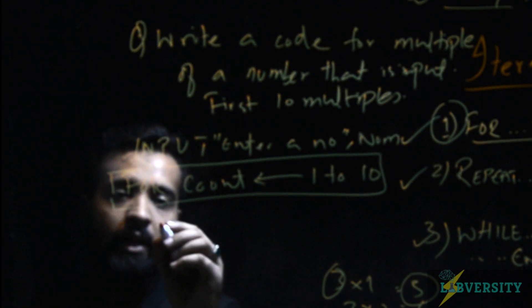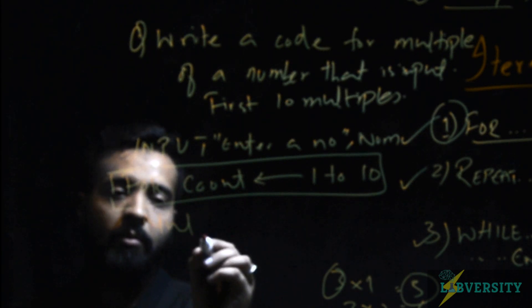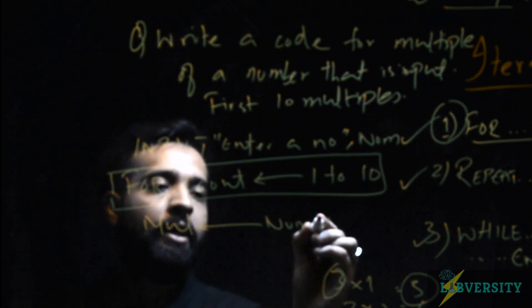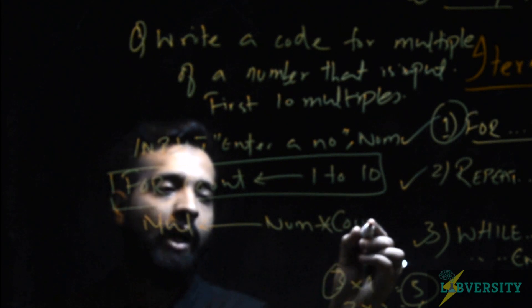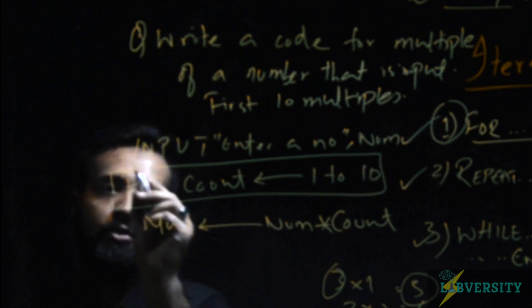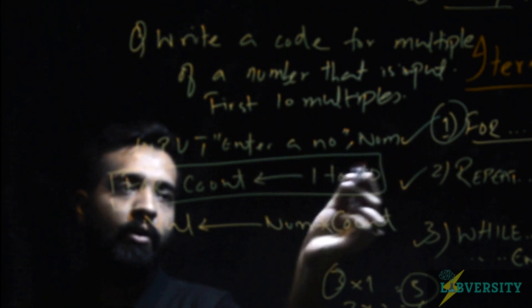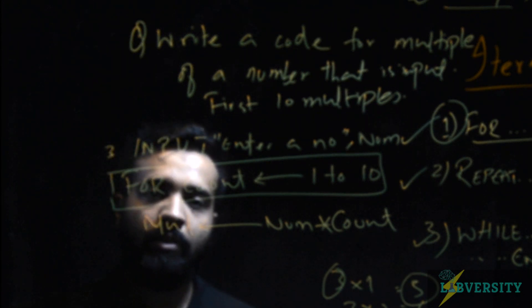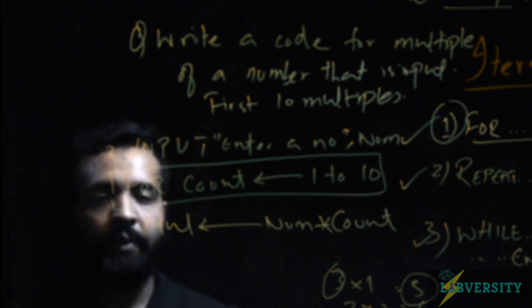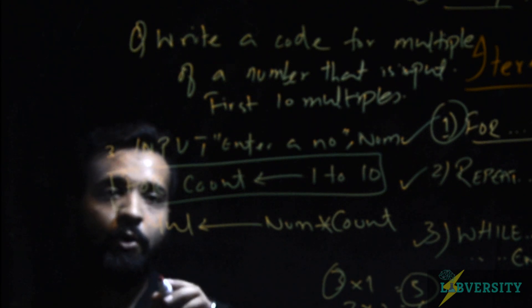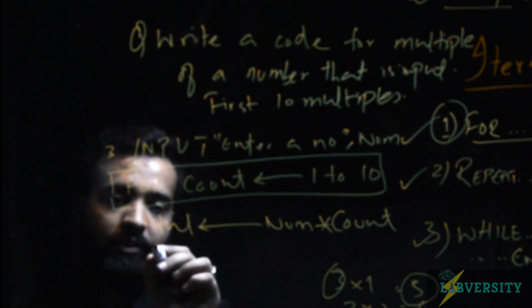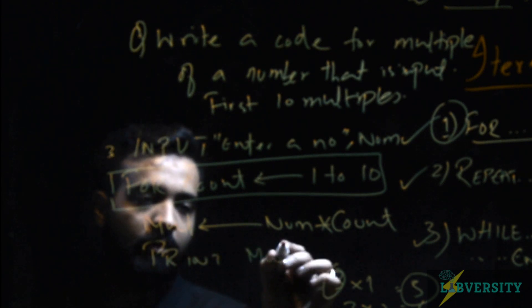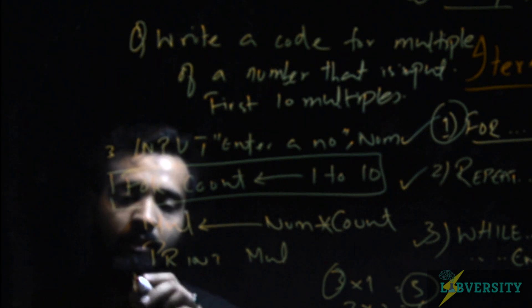What we will do is take a variable called mul: multiple equals num multiply by count. For example, if my first input was 3, this will be 3 ones are, and then the answer will be saved in mul variable and it will be 3. Then I can say print mul and then I can write next.